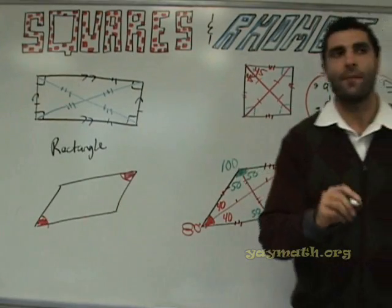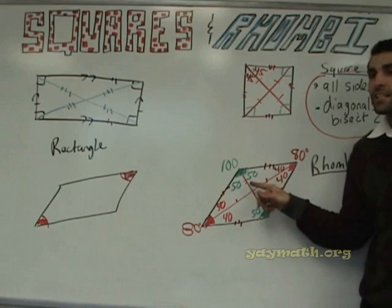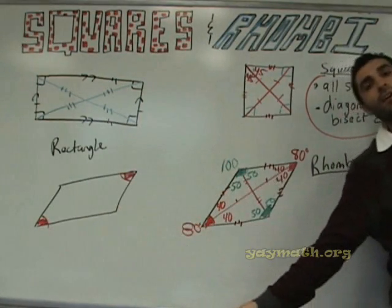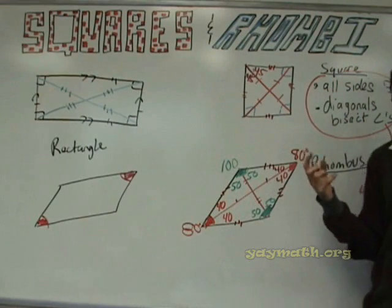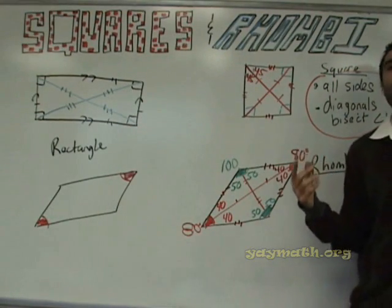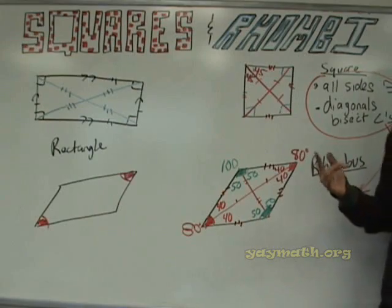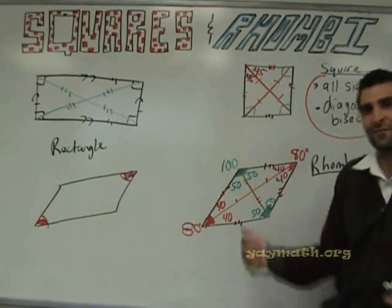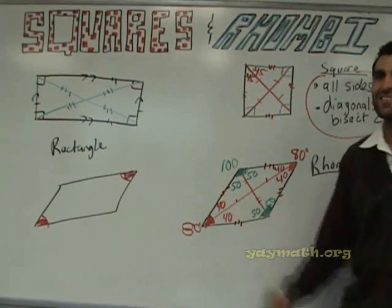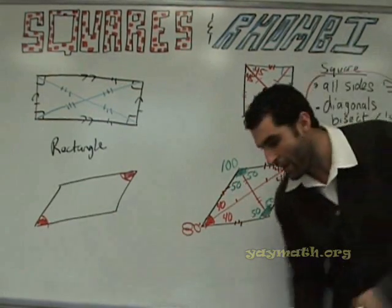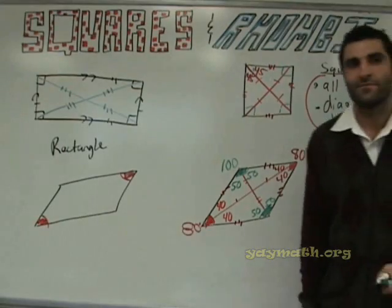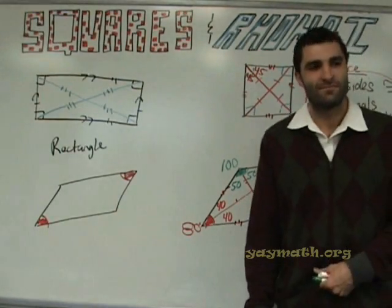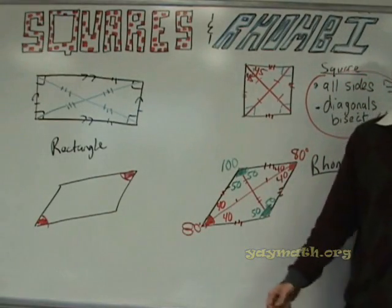Last topic — what are the middle angles? 90 degrees. I always like this one. What's this angle? 90. How do we know the other is also 90? They're vertical angles. And how do we know this one is 90? Because 50 and 40 — looking at the triangle — add up to 90, and all triangles add up to 180.